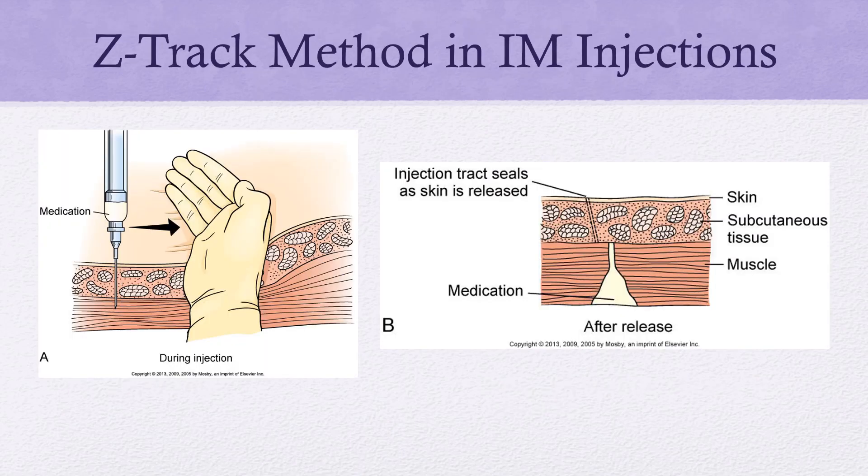The Z-track method addresses the issue of medication leaking back through the needle track into surrounding tissues. Pulling the skin and tissue before the injection causes the needle track to take the shape of the letter Z, which prevents medication from leaking from the muscle into surrounding tissues. A good example is iron — it has a deep purple color, and if it leaks back into the subcutaneous tissue it can cause skin discoloration or, if the medication is irritating, damage to the skin.